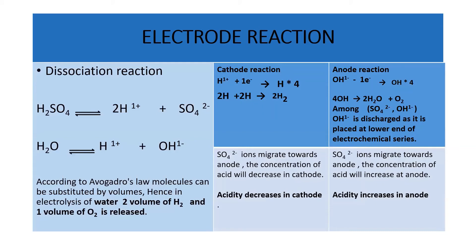Now the dissociation reaction — how does it happen? We have sulfuric acid and water. Sulfuric acid will dissociate into H+ ion and SO4²- ion. Water will dissociate into H+ ion and OH- ion. At the cathode, we have only one cation, that is H+. So definitely hydrogen is going to be released at the cathode.